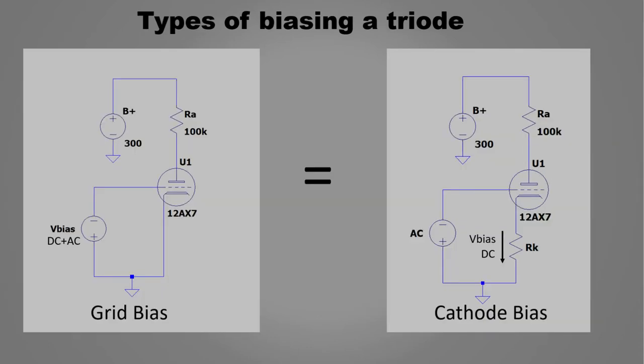Okay, in a real circuit, the easiest way to bias a triode is polarize the cathode with a resistor.